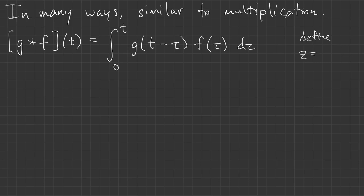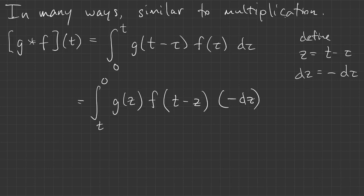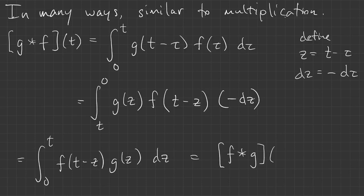I'll define a new integration variable as Z equals T minus tau, so dz is negative d tau. So now when tau is zero, Z is T, and at the other end Z is zero. Tau is T minus Z, and d tau is negative dZ. And I'll use that negative sign to just reverse the order of integration. And we can see that this is the definition of F star G. So G star F equals F star G. Convolution is commutative.